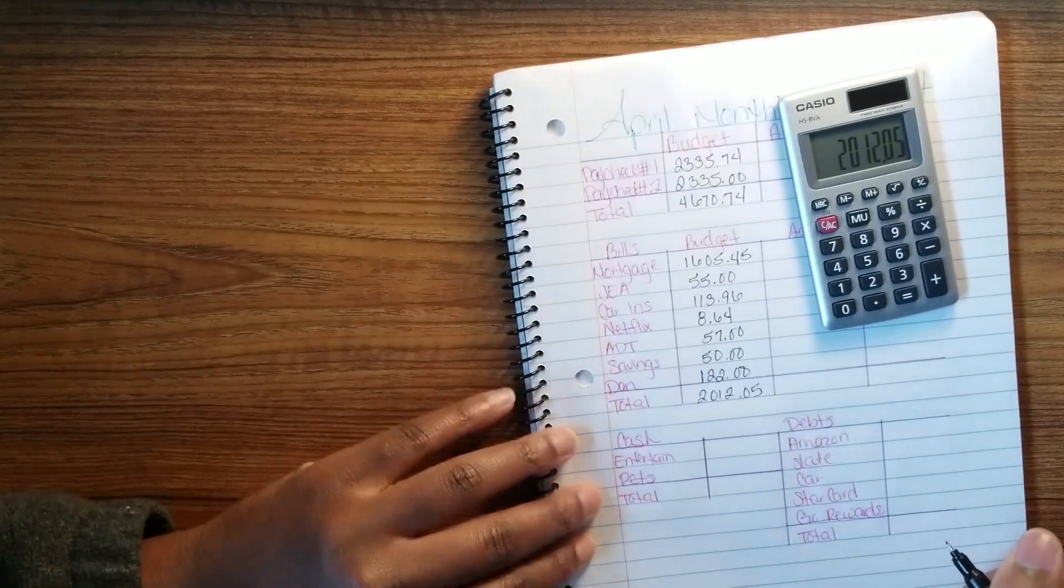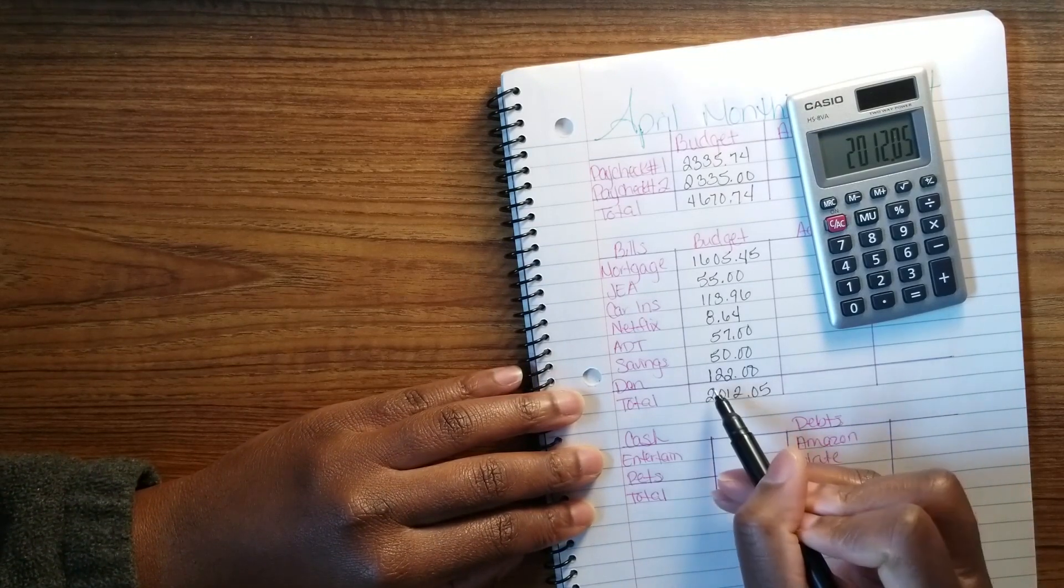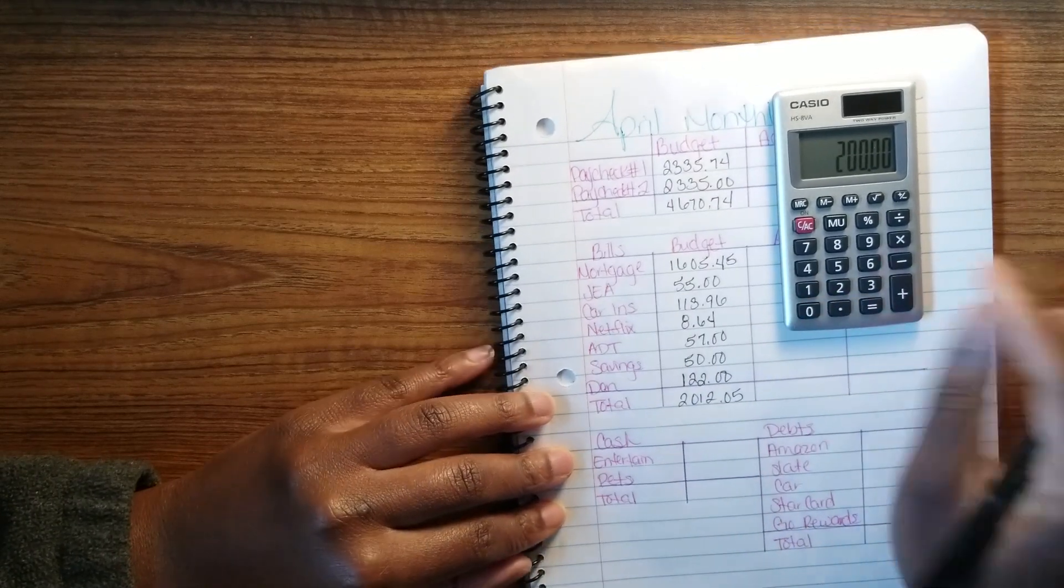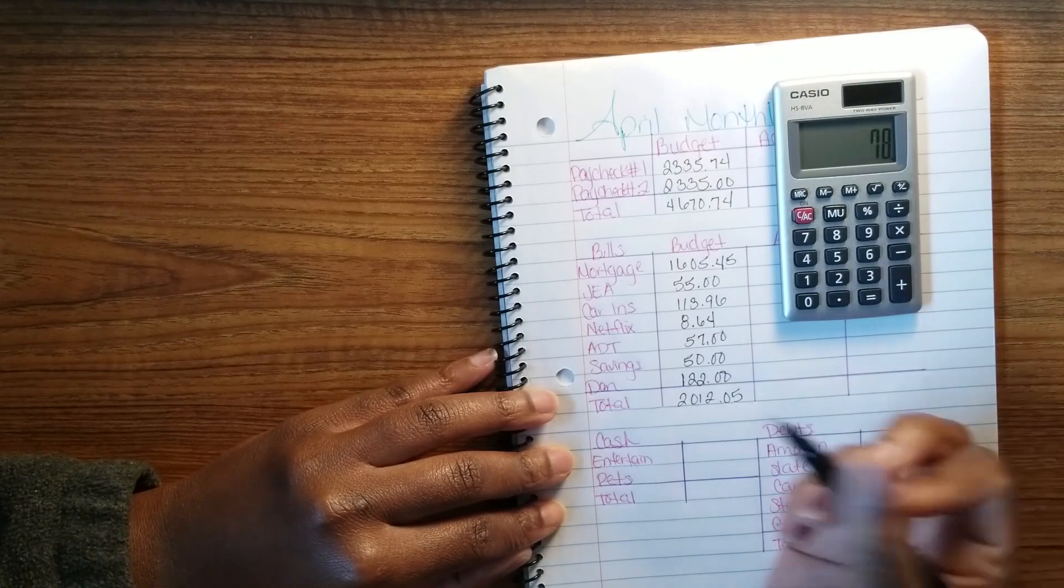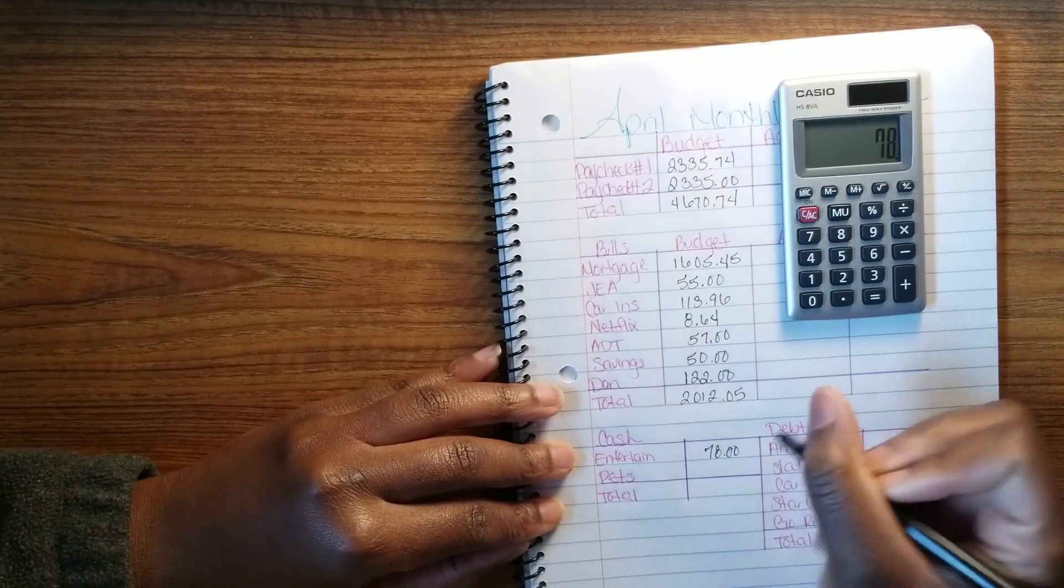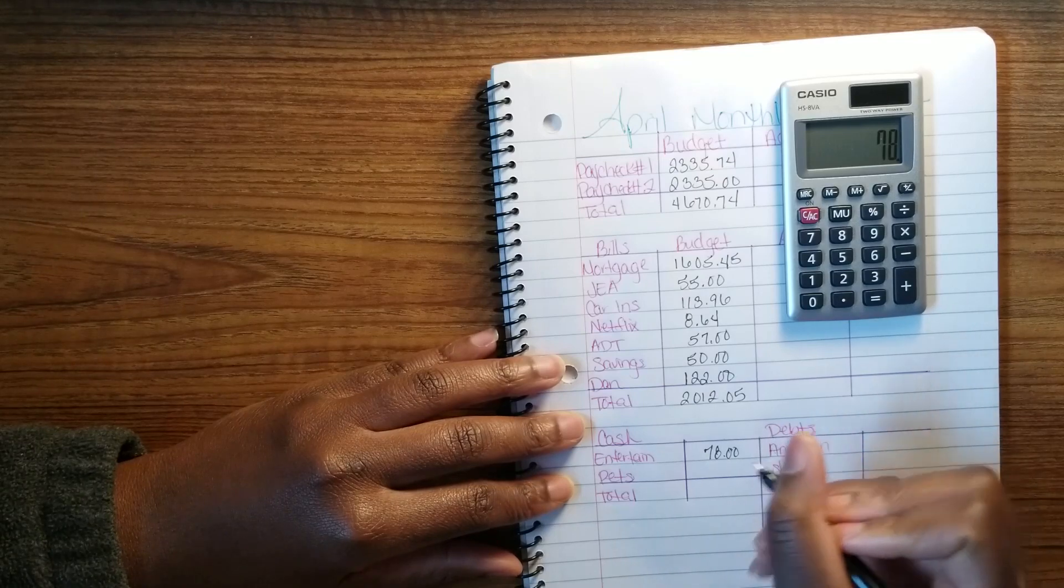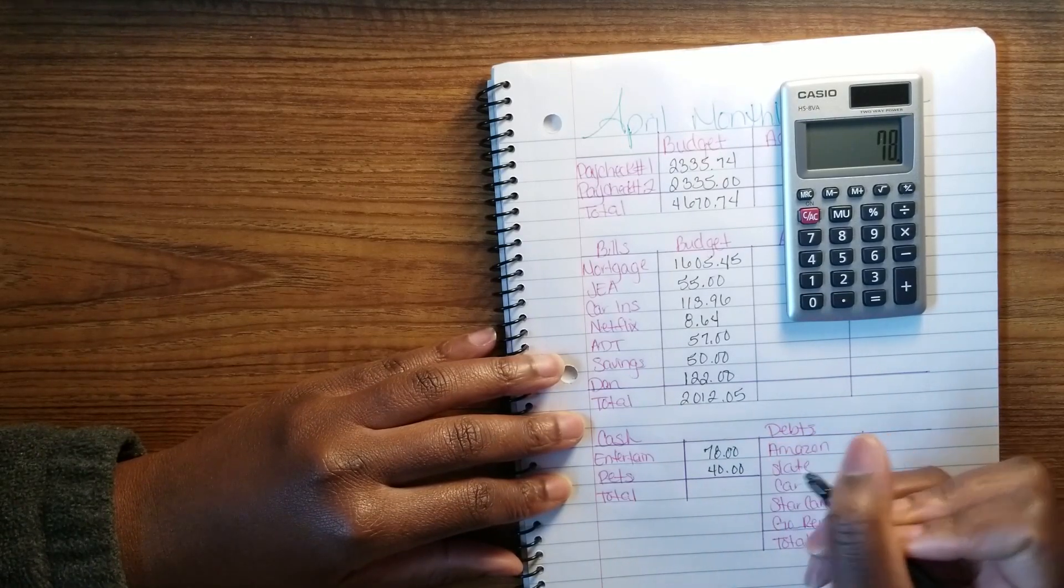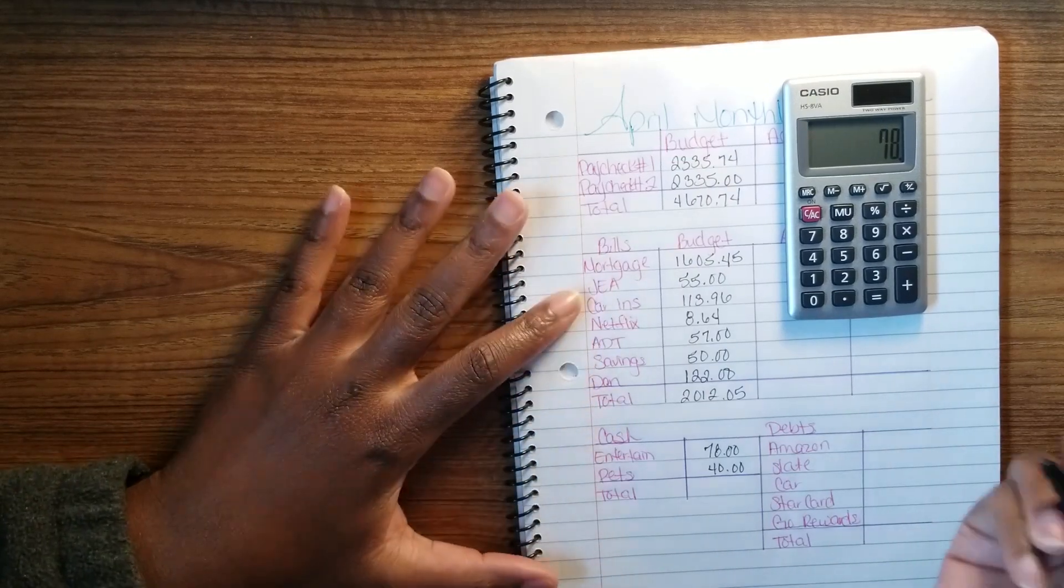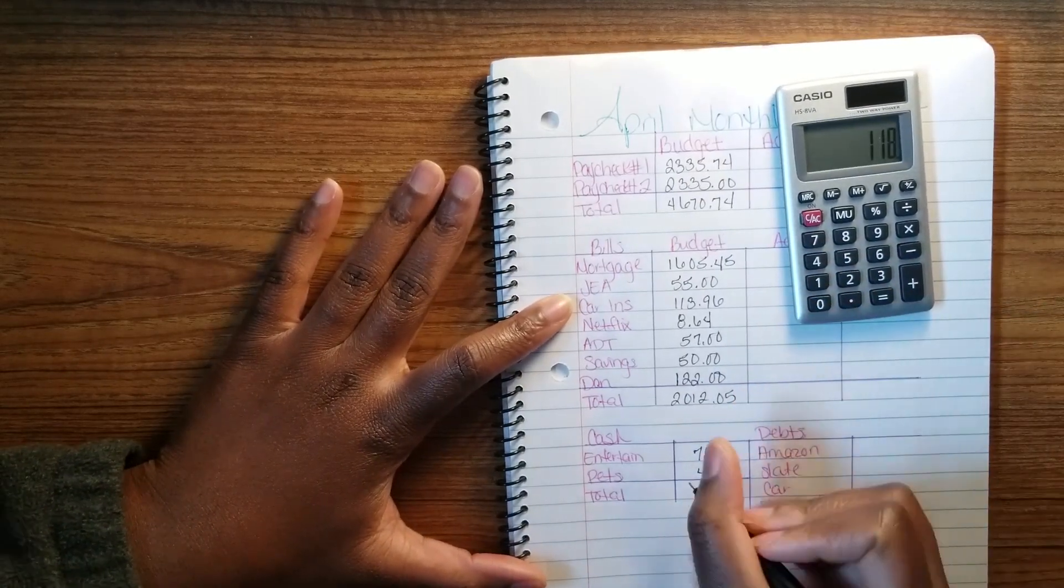My entertainment - normally I give myself like $200 or $250, but since I'm paying Dan, the $200 that I would normally give myself minus $122, so I'll be giving myself $78. I'd rather take that out of my entertainment fund instead of deducting it from my actual budget. And my pets $40 because right now my mother's keeping them. That's $118 total.